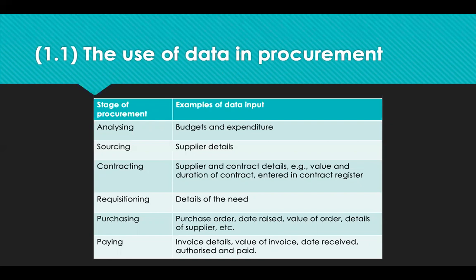In terms of the stages of procurement: when analysing, we're looking at budgets and expenditure data. When sourcing, we want to know about our suppliers. When contracting, we want to understand supplier and contract details like the value and duration of the contract. In the public sector, this may be entered onto a public contracts register. With requisitioning, we need details of the need, which is data-based.